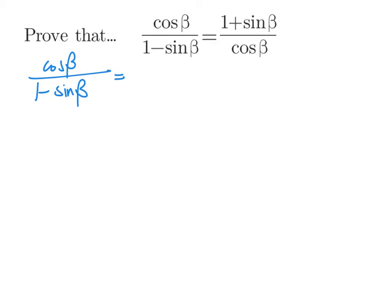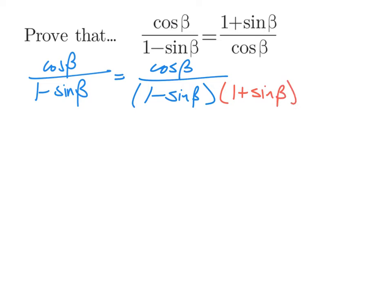We have everything in terms of sines and cosines, but I don't see any other identities we can use. I do have 1 minus sine beta in the denominator, which almost looks Pythagorean, except nothing is squared. But we can apply some algebra to turn it into a Pythagorean identity — I'd really like that to say 1 minus sine squared. If I multiply 1 minus sine times 1 plus sine, we get the difference of two squares. So I'll multiply the denominator by that, and to keep the fraction's value the same, I'll multiply the numerator by the same thing.